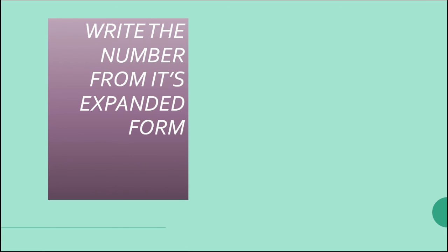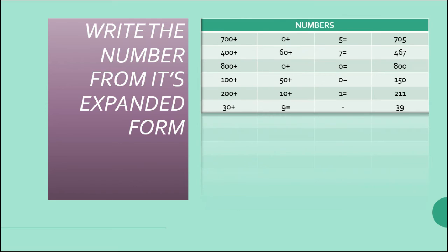Now let us write the numbers from their expanded forms. 700 plus 0 plus 5 means the number is 705. Next, 400 plus 60 plus 7 means the hundreds place is 4, tens place is 6, and units place is 7, so the number is 467.